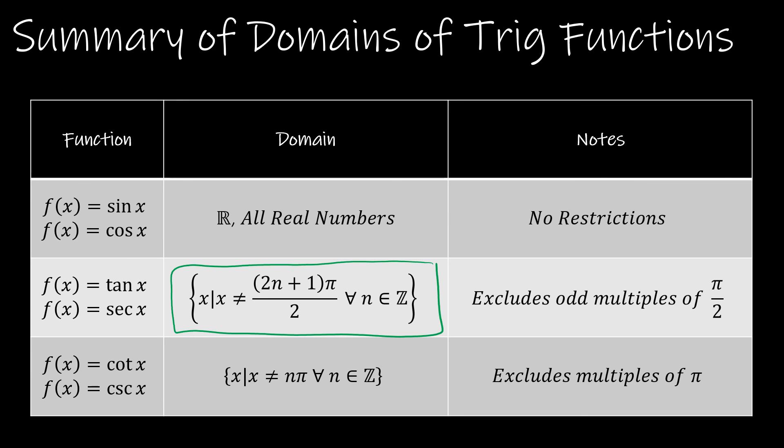And for cotangent and for cosecant, again, the domain excludes the multiples of pi. That's where those asymptotes were. And so again, all of the x's such that x is not equal to n pi for all values of n that are integers.